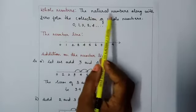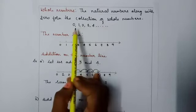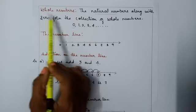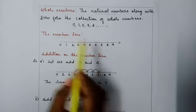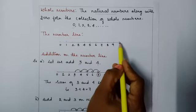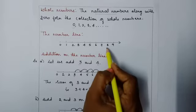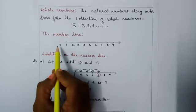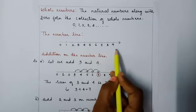Whole numbers. The natural numbers along with 0 form the collection of whole numbers. That means 0 along with the natural numbers are called whole numbers. Now let us learn to plot the whole numbers on the number line. Observe the number line. It has a starting point and an arrow indicating that the numbers extend to infinity. The whole numbers start from 0 and keep going — they have no ending at all.